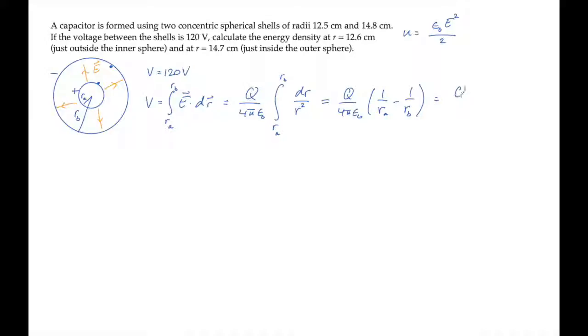And then rearrange so that we end up with the charge q over 4 pi epsilon naught, product of the radii divided by the difference between the two radii. We know the voltage on the far left-hand side of this line and all the radii, so we can solve for the magnitude of charge q on the spheres.